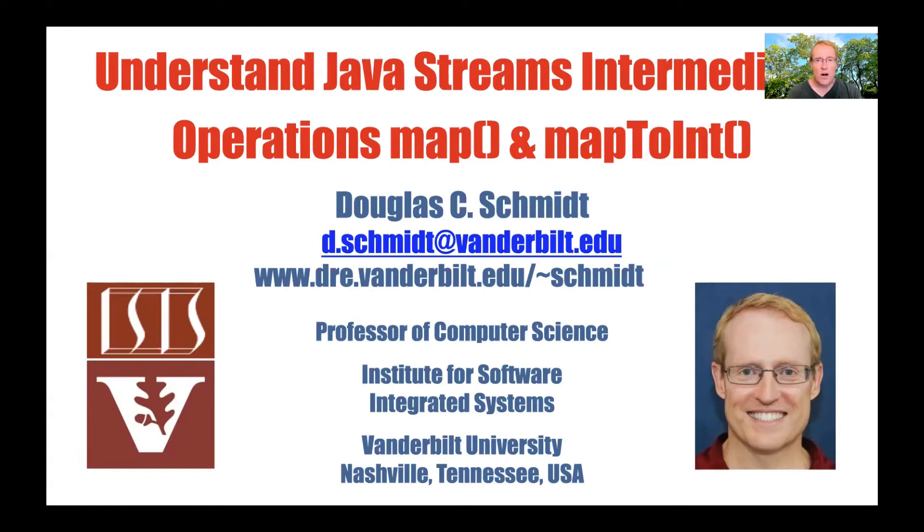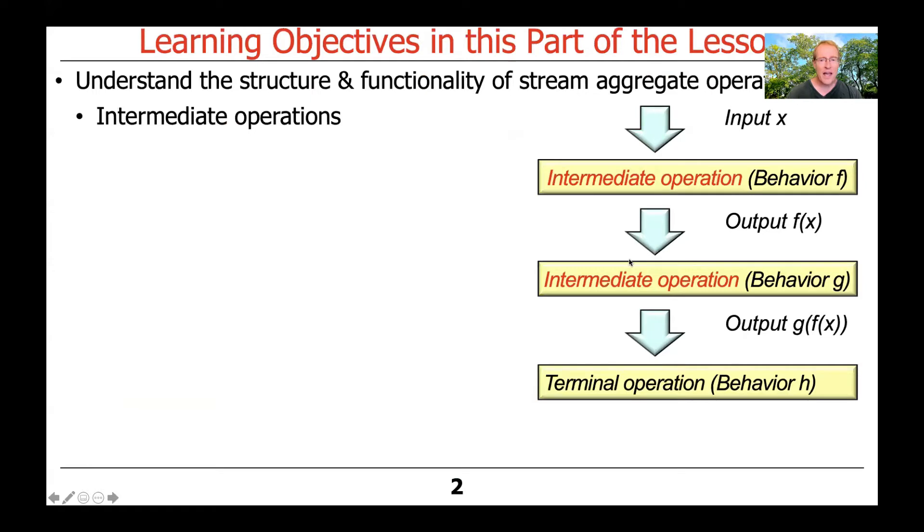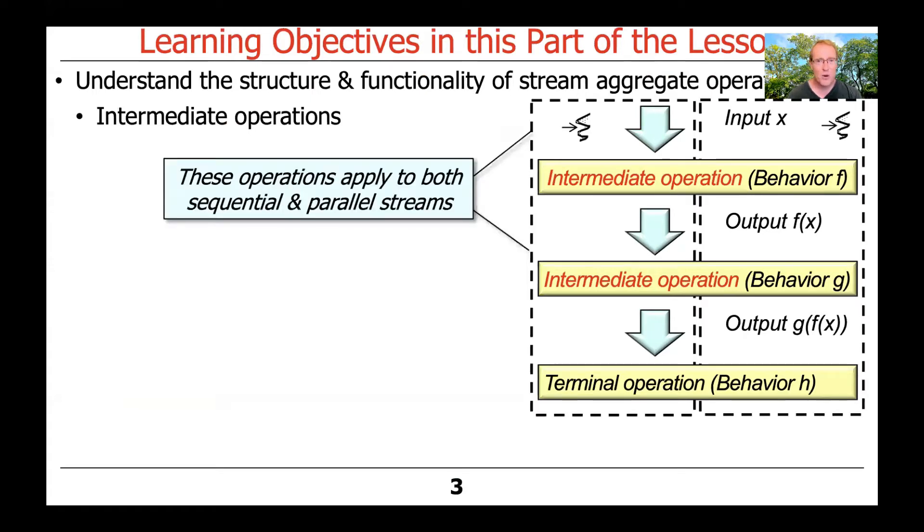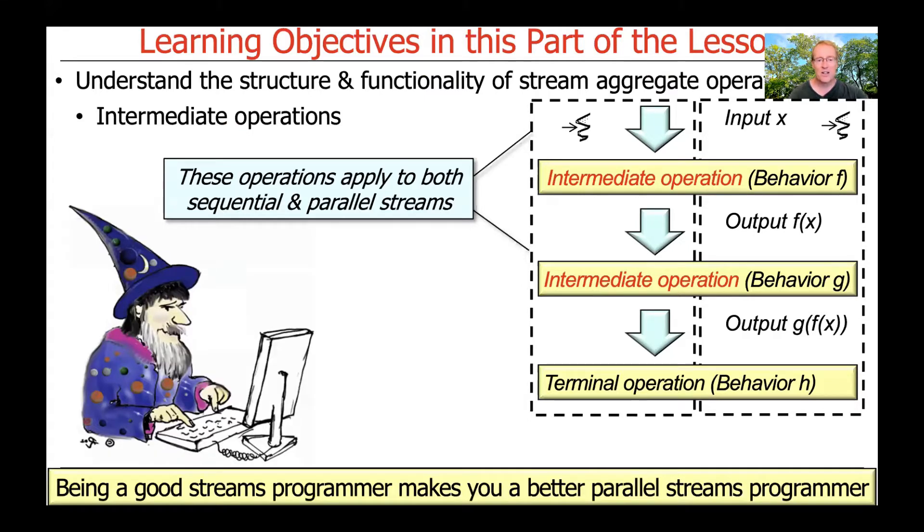We're going to continue our coverage of aggregate operations in Java streams, focusing now on some of the most common so-called intermediate operations. We'll start by talking about map and mapToInt, and you'll see that these operations apply to both sequential and parallel streams. Being a good streams programmer makes you a better parallel streams programmer, as you'll discover later.